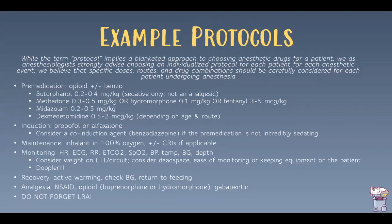For pre-medications, opioids with or without a benzodiazepine are always a good idea — butorphanol for more sedation, or methadone, hydromorphone, or fentanyl for better pain relief. Midazolam is the benzodiazepine of choice. All of these are reversible. Dexmedetomidine can be used in older pediatric patients. For induction, propofol or alfaxalone with a co-induction benzo is appropriate. Maintain on inhalants — but remember that changing the vaporizer dial will alter concentration much more quickly than in adults. CRIs are possible but be mindful of total fluid volume to avoid overload.